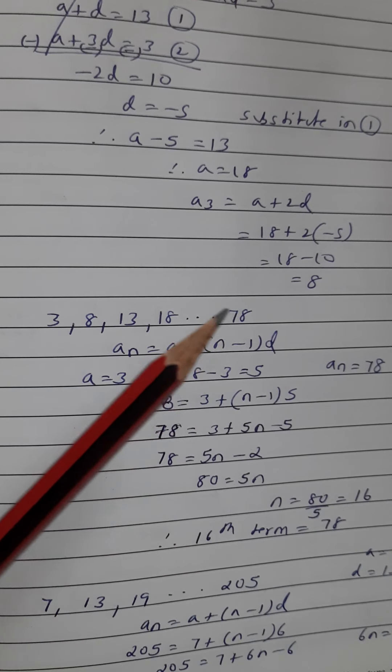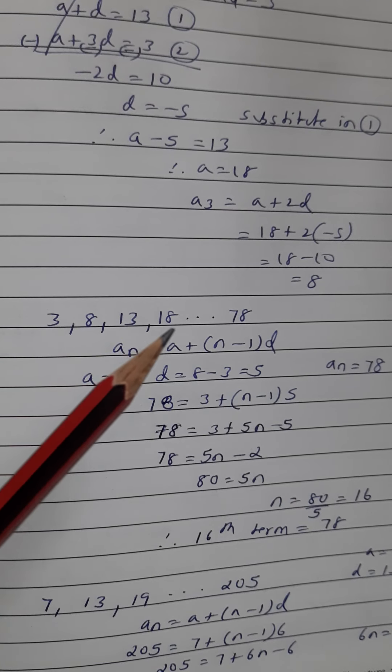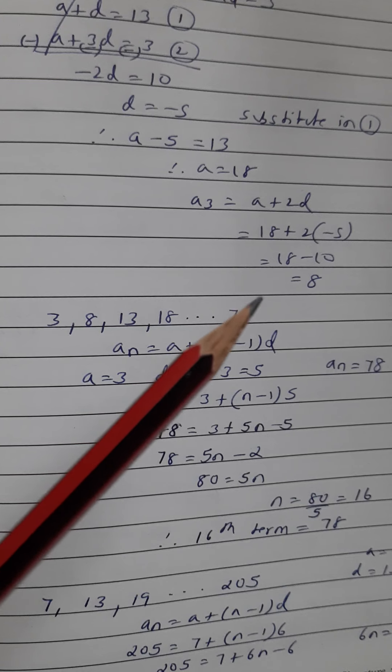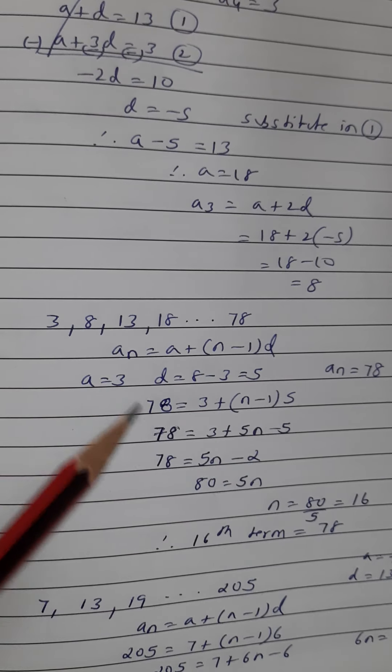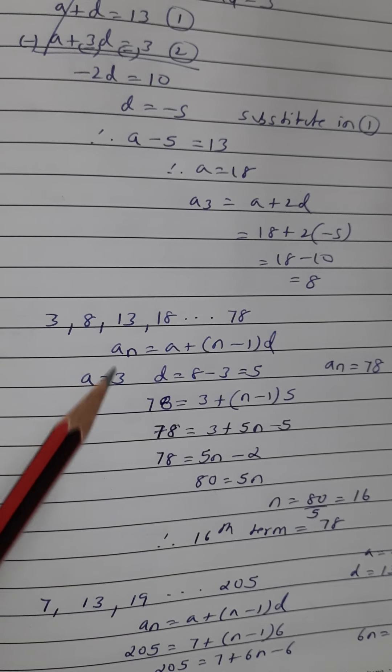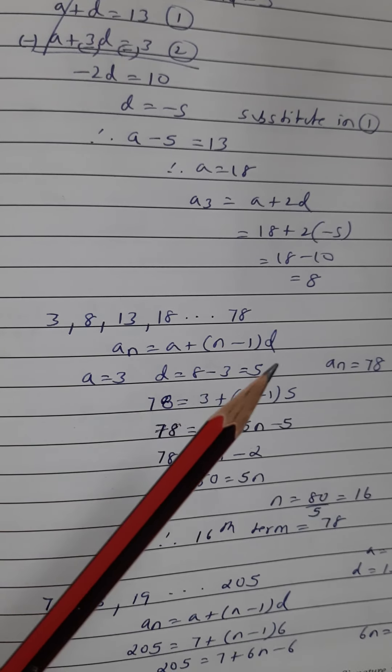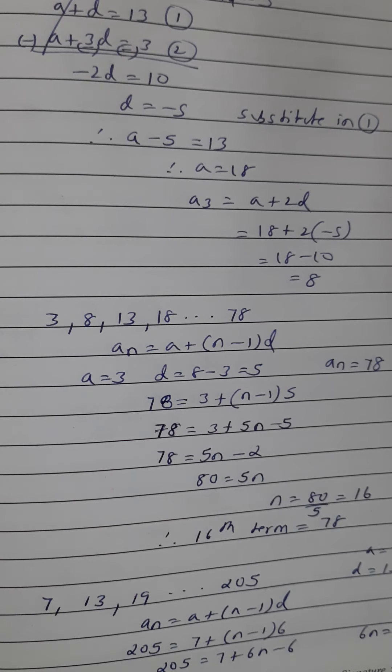That means 78 is which term? 78 is the 16th term of the series. That means this is a_16 hai, actually this is a_1, this is a_2, this is a_3, a_4, like 5, 6, 7, 8, 9, 10, 11, 12, 13, 14, 15, and this 78 is the 16th term of this series. So that's the meaning of the question. So the question was find out 78 is which term of this arithmetic progression, so the answer is 78 is the 16th term.